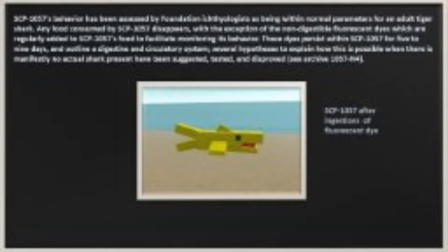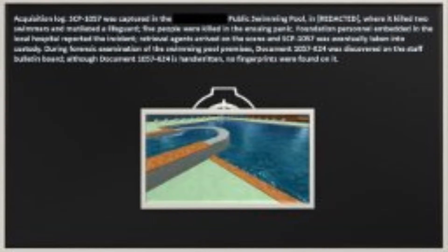These dyes are regularly added to SCP-1057's food to facilitate monitoring its behavior. They persist within SCP-1057 for 5 to 9 days and outline a digestive and circulatory system. Several hypotheses to explain how this is possible when there is manifestly no actual shark present have been suggested, tested, and disproved. See Archive 1057-N4.